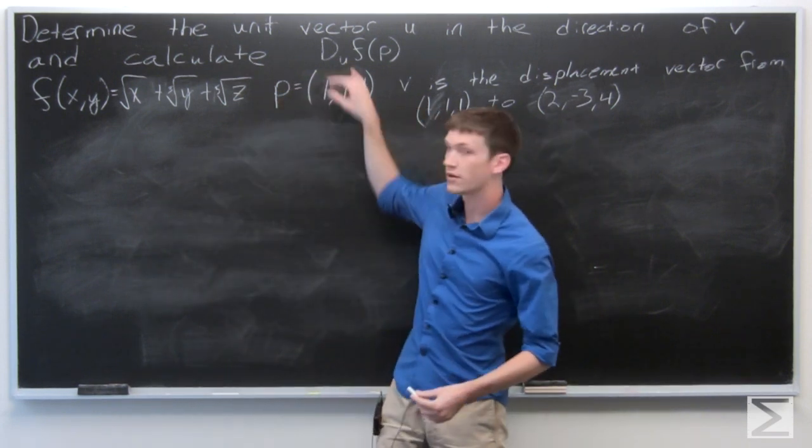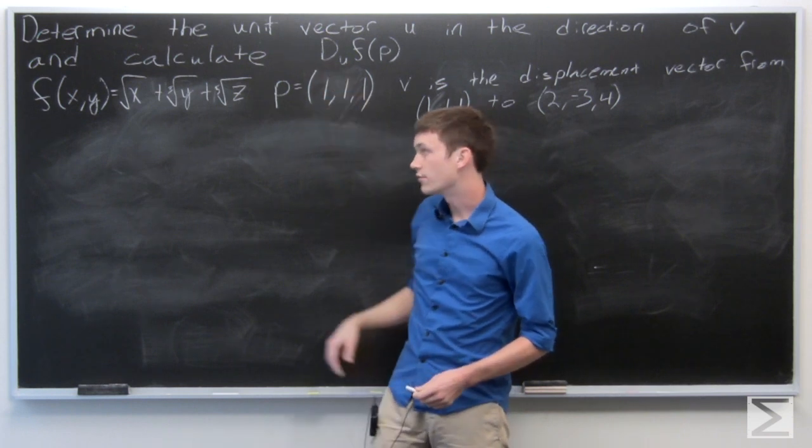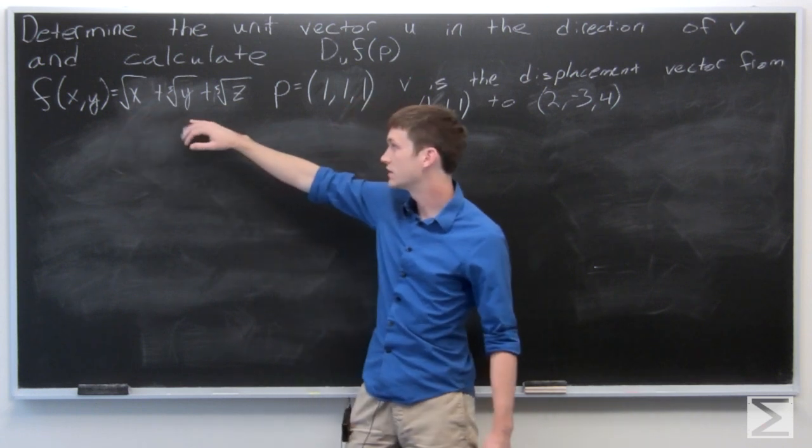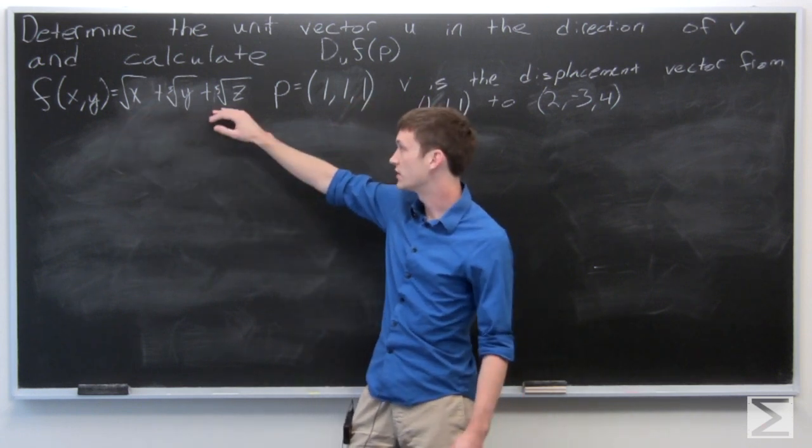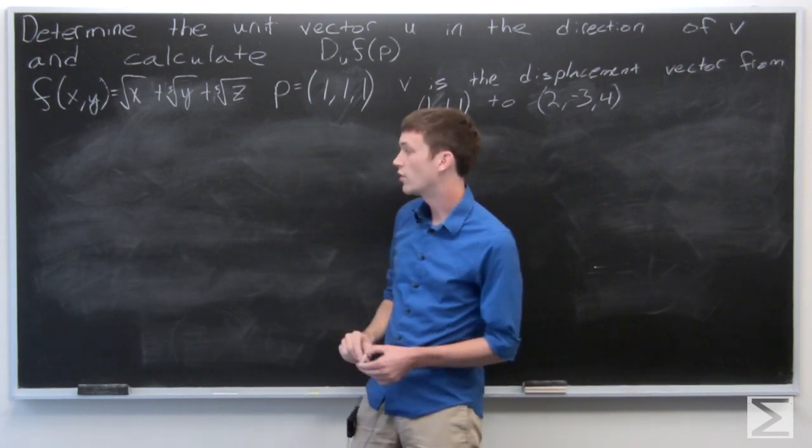And we want to also calculate the directional derivative of f at p in the direction of u. Our function f is given as the square root of x plus the cube root of y plus the fifth root of z, and our point p equals (1,1,1).